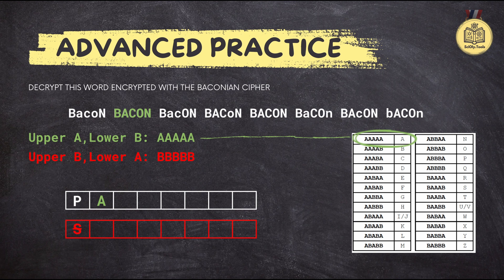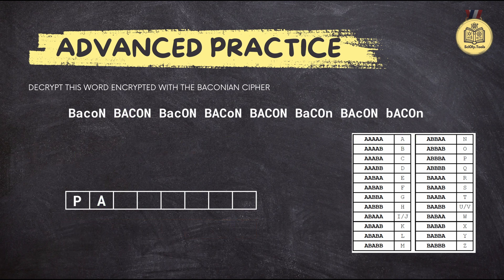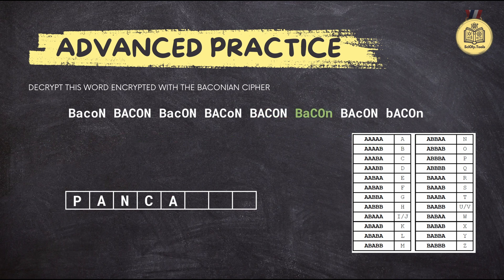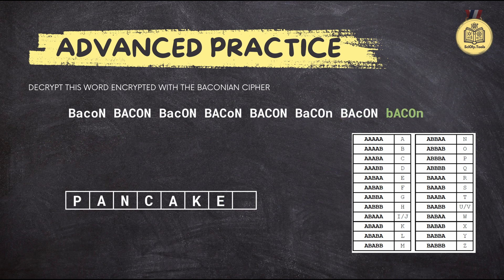Now that we know uppercase is A and lowercase is B, let's decode the rest of the groups. Group three, 'bacon,' gives us the letter N. Group four, 'bacon,' decodes to C. You've successfully decoded all the groups in our message: P-A-N-C-A-K-E-S. Putting those all together, we get 'pancakes.' You've done it again — another Baconian cipher conquered.